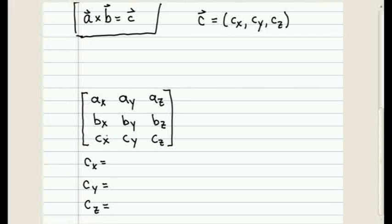The components of the unknown vector C, CX, CY, and CZ are written as the third row in this matrix.